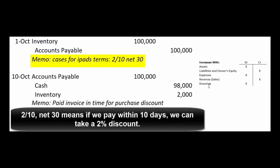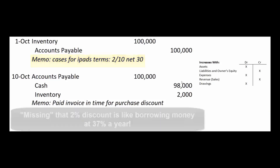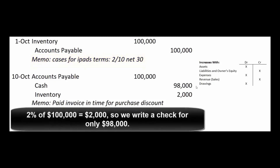If the supplier gives us terms 2/10 net 30, we pay the invoice within 10 days and we get to take a 2% discount — that's what we'll do. If we don't take advantage of that discount, it's like borrowing money at 37%, and nobody wants to borrow money at 37%. So we take the 2% discount and write a check for $98,000.